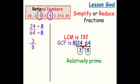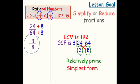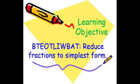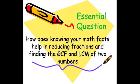But now, when we're simplifying fractions, we're not going to use the term relatively prime. We're going to use a term called simplest form, or they might use 'reduce completely.' By the end of this lesson, I'll be able to reduce fractions to simplest form. Our essential question is: how does knowing your math facts help in reducing fractions and finding the GCF and LCM of two numbers?